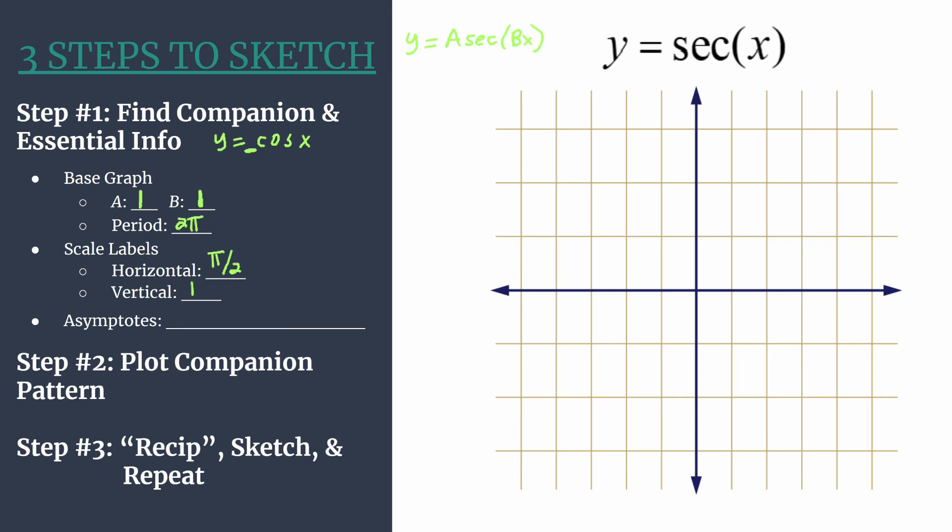So horizontally we're counting by one pi over two. So that's one pi over two. Two pi over two reduces to pi. Three pi over two. Four pi over two reduces to two pi. And five pi over two.